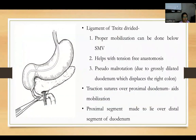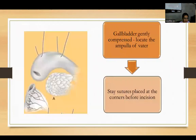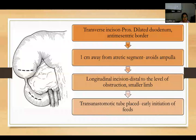The ligament of Treitz is divided for proper mobilization below the superior mesenteric vessels, enabling tension-free anastomosis and ruling out pseudo-malrotation due to a grossly dilated duodenum displacing the right colon. Traction sutures are placed over the proximal duodenum. The gallbladder is gently compressed to locate the ampulla of Vater, and stay sutures are placed at the corners. A transverse incision is placed over the proximal dilated duodenum along the antimesenteric border, 1 cm away from the atretic segment to avoid the ampulla. A longitudinal incision is made distally. A trans-anastomotic tube is placed for early feeding.